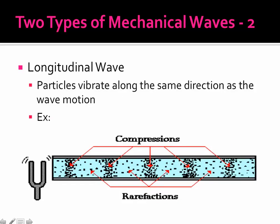The other type of mechanical wave is a longitudinal wave. In a longitudinal wave, the particles vibrate in the same direction of the wave motion. So like sound is a good example of a longitudinal wave. The wave is traveling left to right. The particles are also vibrating left to right.